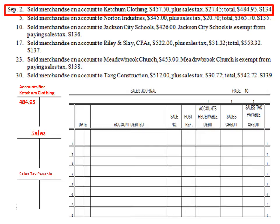On the credit side, we break it into two parts: Sales Credit of $457.50, which increases owner's equity, and Sales Tax Payable of $27.45, the amount owed to the government. In the Sales Journal, we record the date as September 2nd, write just the company name 'Ketchum Clothing' in the account column, Sales Invoice S134, Accounts Receivable Debit $484.95, Sales Credit $457.50, and Sales Tax Payable $27.45.